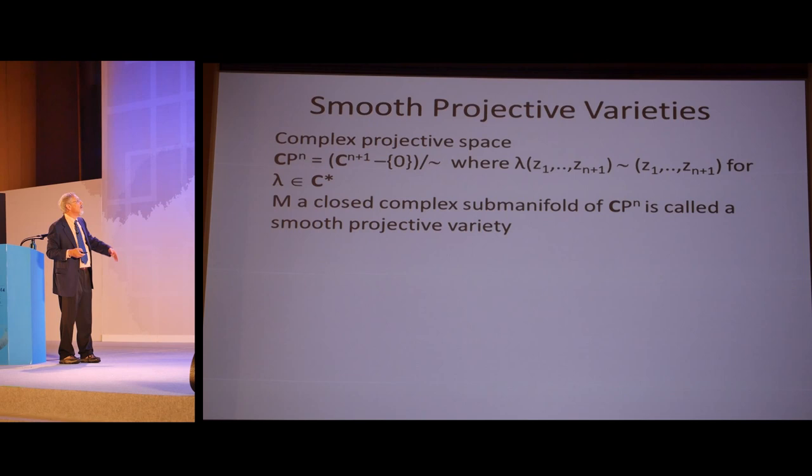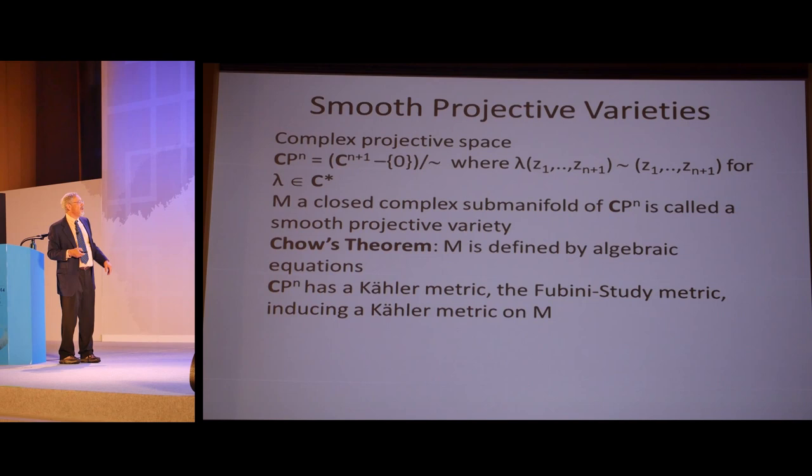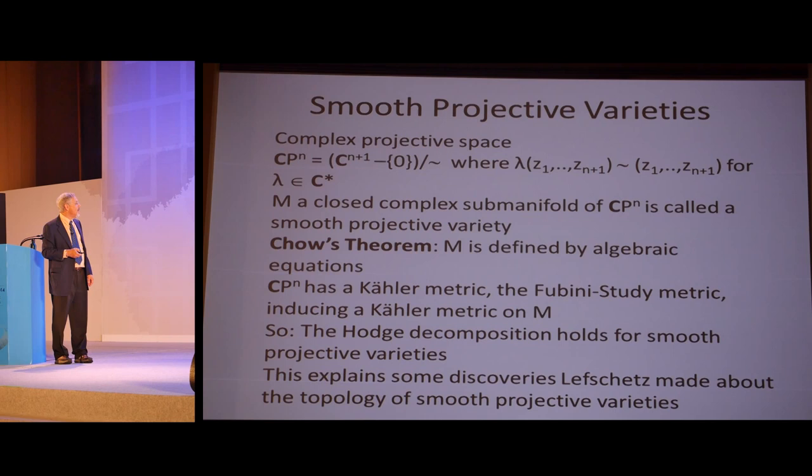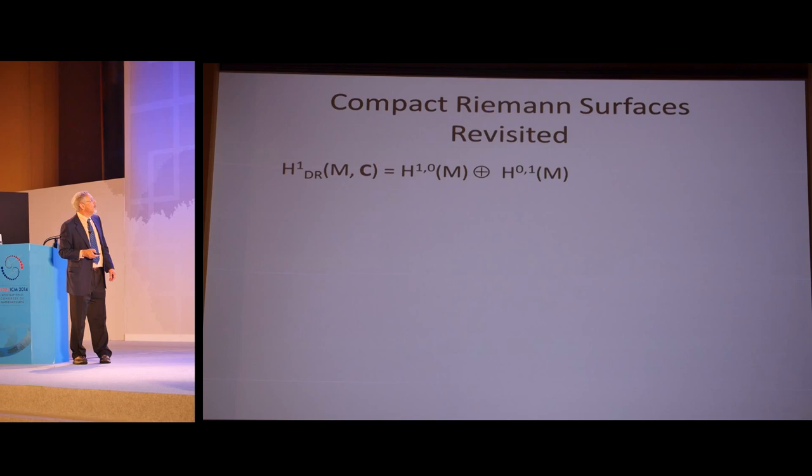On a compact Kähler manifold, we have that the de Rham cohomology breaks up into direct sum p plus q equals k, H^(p,q)(M). The harmonic forms depend on this metric, but the decomposition of cohomology doesn't. CP^n remembers the set of lines through the origin in C^(n+1), and a closed complex submanifold of CP^n is called a smooth projective variety. It's defined by algebraic equations automatically. Because CP^n does have this Fubini-Study metric, which is a Kähler metric, all smooth projective varieties inherit this metric. If you're an algebraic geometer, you don't have to worry about the case where there's no Hodge decomposition. For smooth projective varieties, this always works. This explained some discoveries that Lefschetz had made using geometric arguments. For example, the fact that H¹ of a Riemann surface is 2g dimensional, an even dimension.